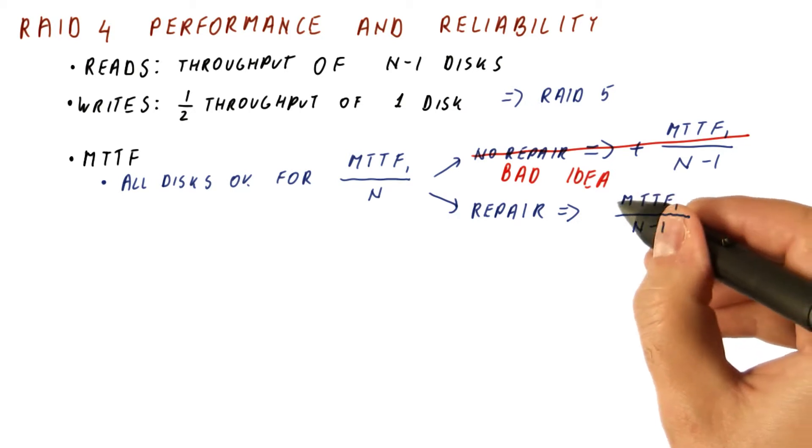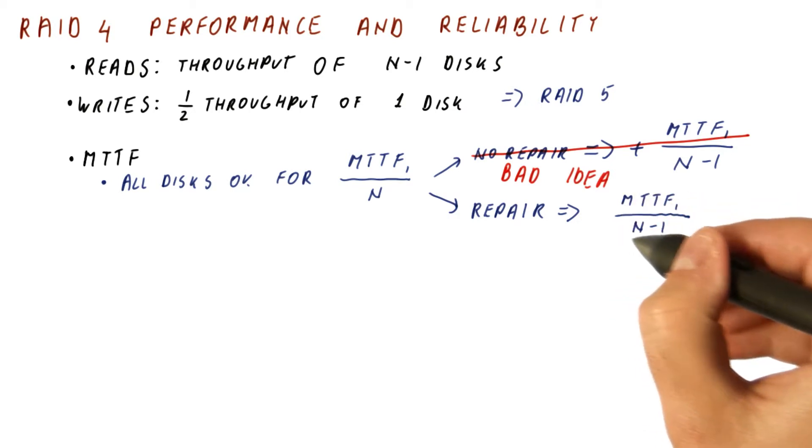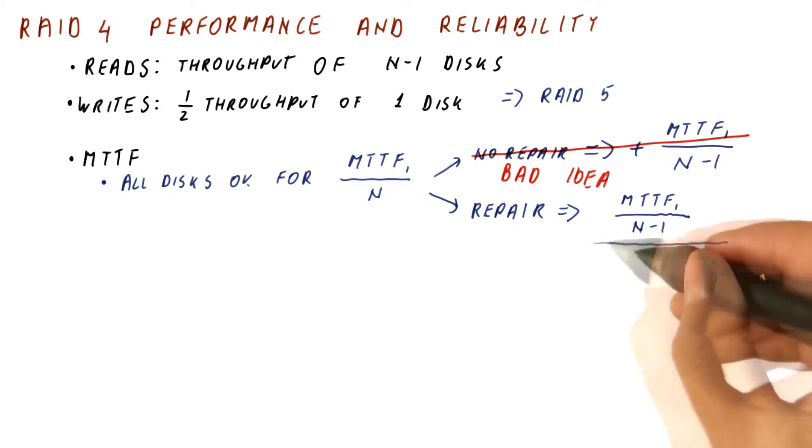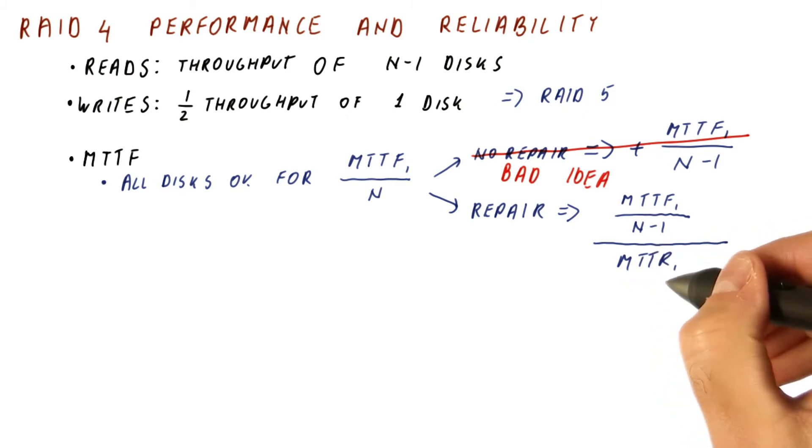So for example, if we have three disks, the first failure among three is going to happen sooner than the first failure among just one disk. And then we divide that with the mean time to repair.